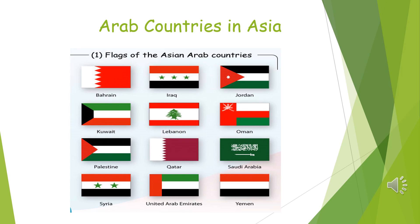The Arab countries present in Asia are Bahrain, Iraq, Jordan, Kuwait, Lebanon, Oman, Palestine, Qatar, Saudi Arabia, Syria, United Arab Emirates, and Yemen. Please try to remember these countries.